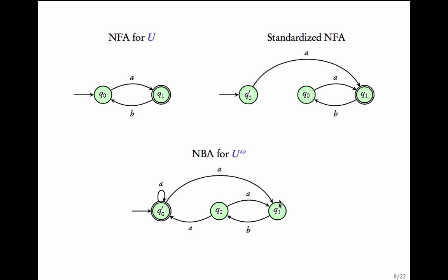Whenever there is a possibility of going to the accepting state, we add the possibility of going to q0' instead. Making q0' the only accepting state means it must be visited infinitely often. Each time we do that, we read a word in u in chunks — a word in u, then another word in u, and so on. This gives us the non-deterministic Büchi automaton for u^ω.